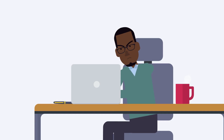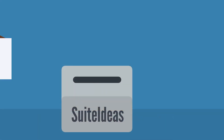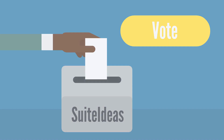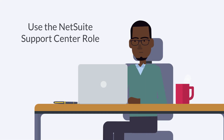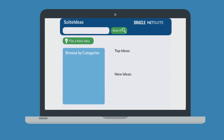If NetSuite doesn't seem to be able to do something specific and you can't find a suitable suite app, then you may consider using Suite Ideas. Suite Ideas is a place where NetSuite users can submit suggestions for NetSuite improvements and vote on other users' ideas. To access Suite Ideas, log in with the NetSuite Support Center role and choose the Suite Ideas portlet from the support dashboard. In Suite Ideas, search for the idea you have to see if someone else has already made that suggestion.